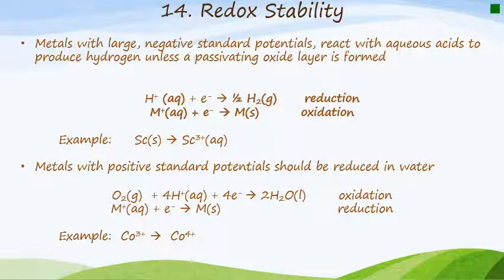What about reacting metals with acid? Metals that generally have large negative standard potentials are going to react with aqueous acids to produce hydrogen. That means we're going to see the reduction reaction occurring for the acid — essentially water being reduced to hydrogen — while the metal itself is oxidized. For example, scandium goes from its solid form to the plus three oxidation state.